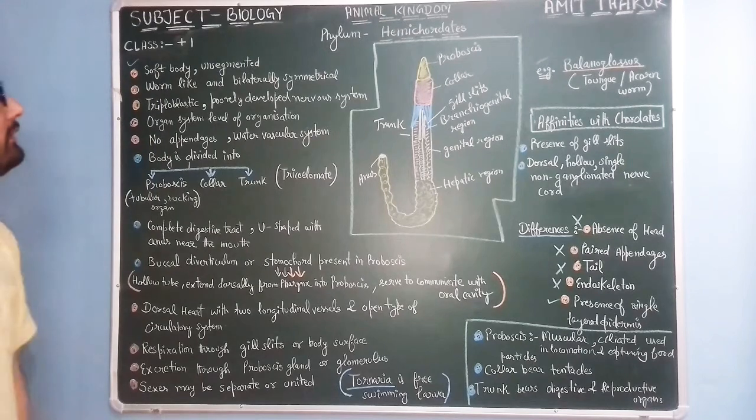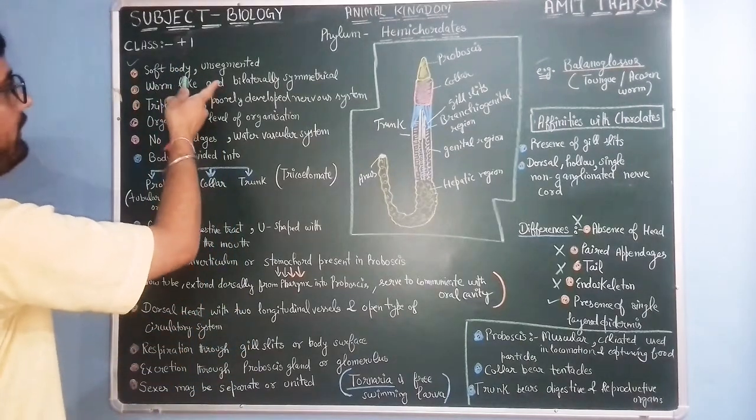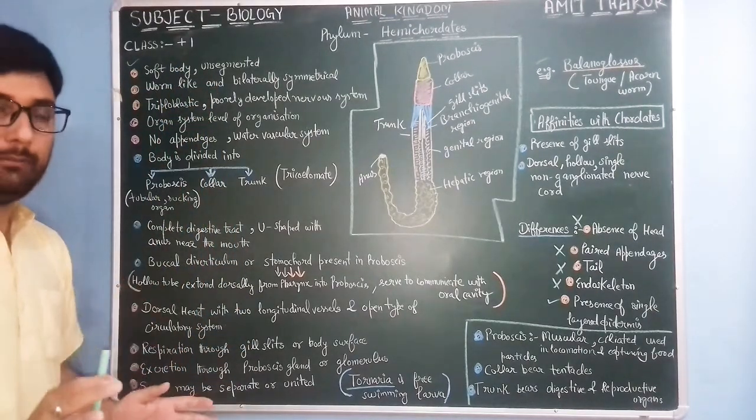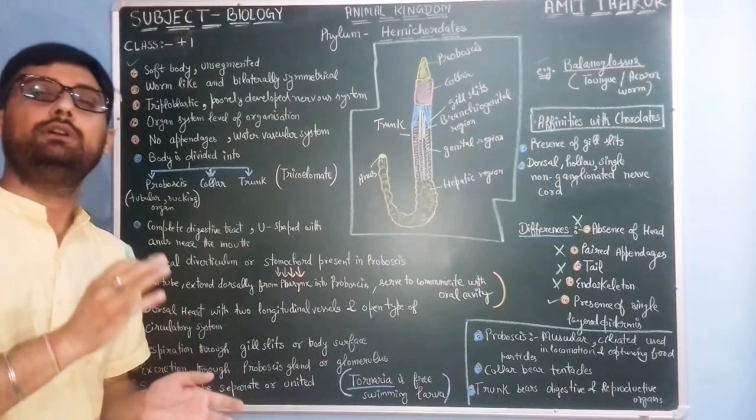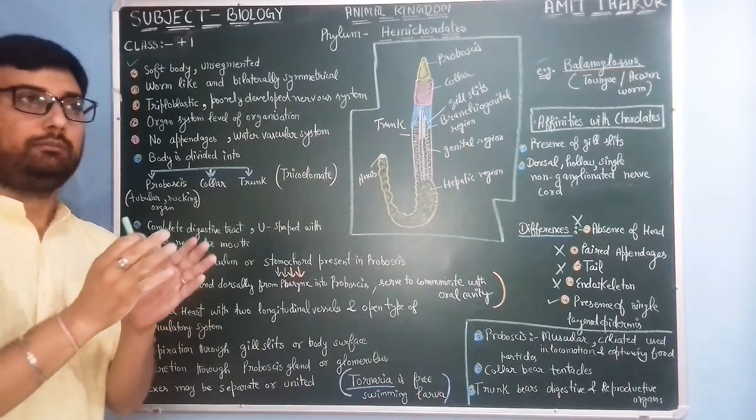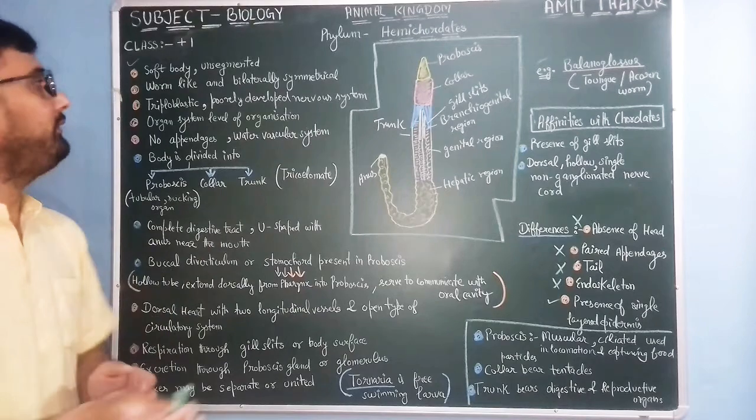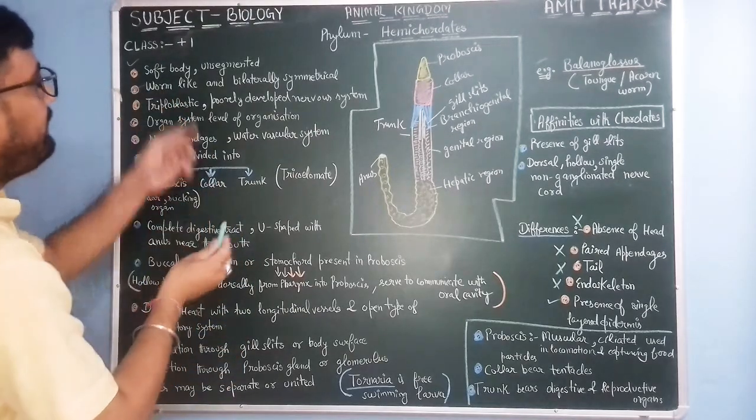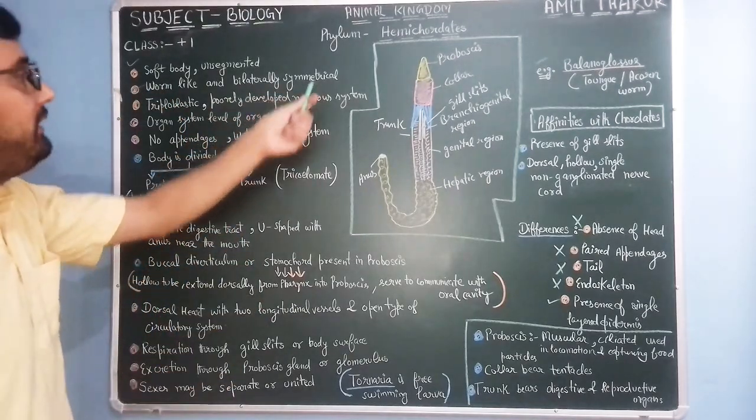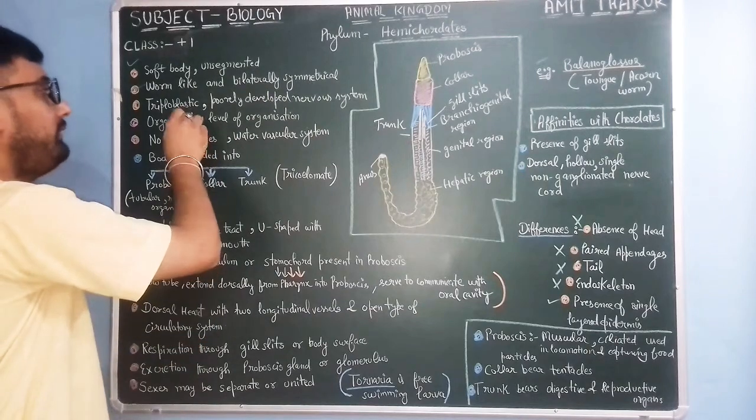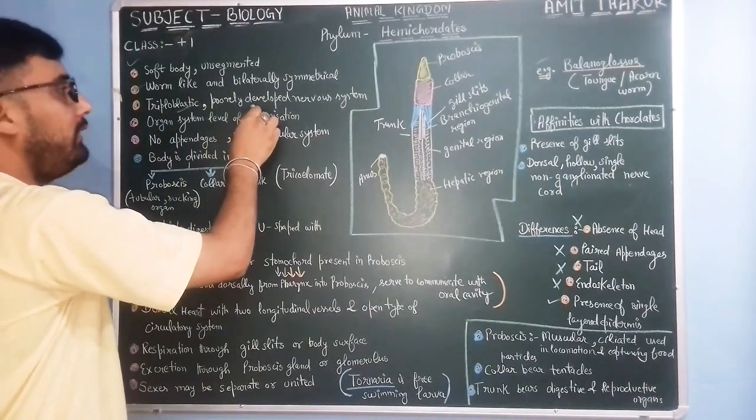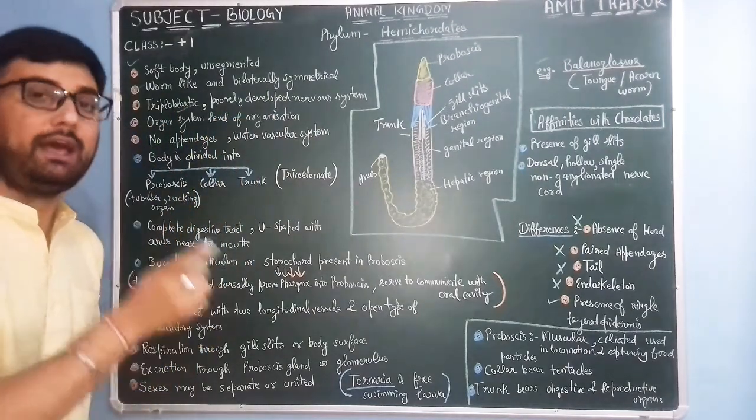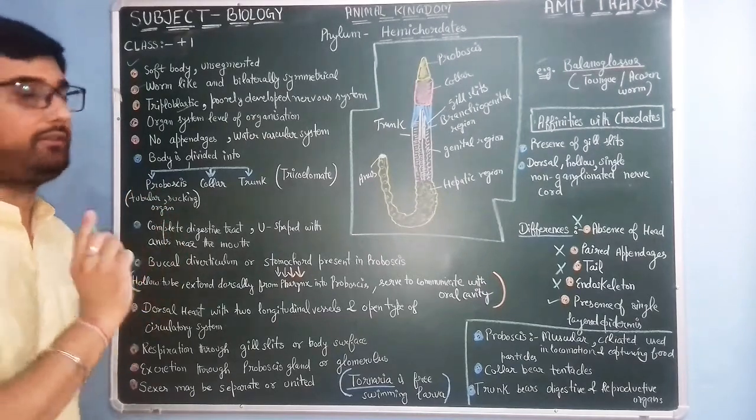Characteristic features: they have soft body and unsegmented body, meaning their body is not partitioned into different compartments. They are worm-like and bilaterally symmetrical, triploblastic, with poorly developed nervous system as we have seen in case of echinodermates.